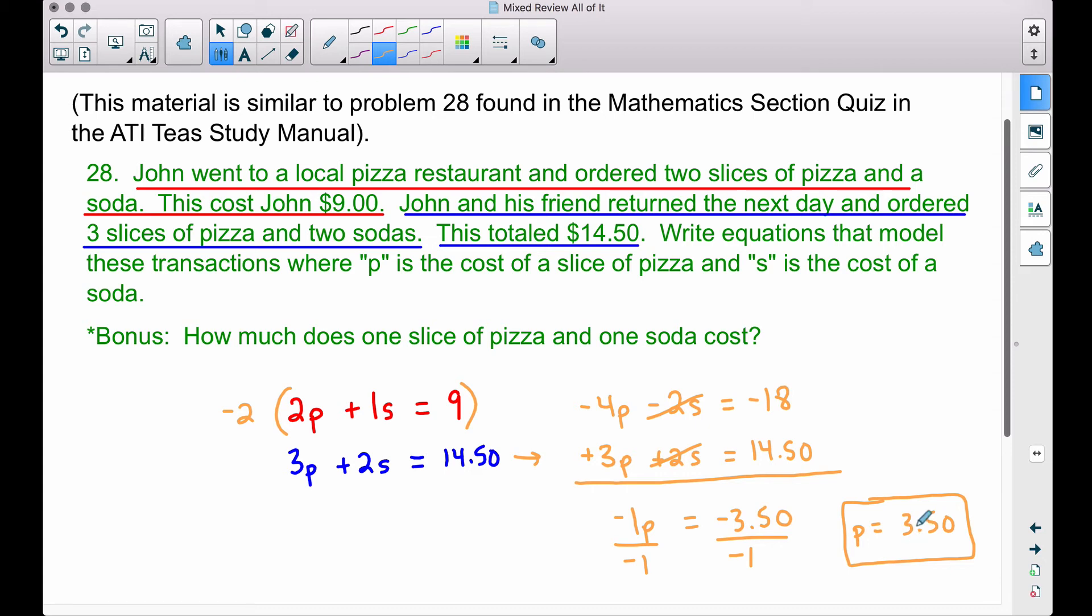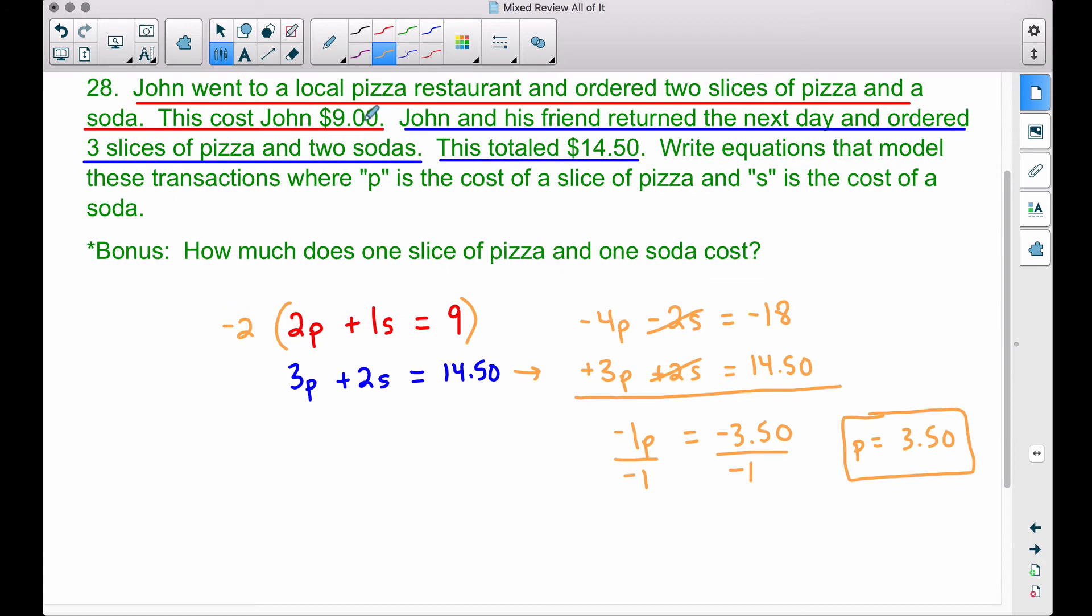How can we find the soda? Well, go back up here to this sentence where John got two slices of pizza and he got a soda. We knew that the two slices of pizza and the soda cost nine dollars. So let's refer back to this equation, and let's take that two slices of pizza. We know that one slice of pizza is three dollars and fifty cents, so let's multiply that plus one soda is equal to nine dollars.